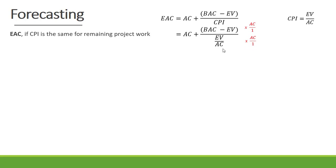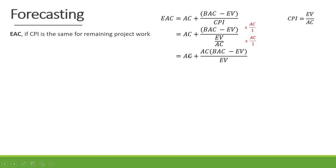So that's our actual cost plus budget at completion minus earned value, divided by earned value divided by actual cost. Now if we multiply above and below the line by actual cost, the actual cost cancels out below the line. So we get actual cost plus actual cost times budget at completion minus earned value, divided by earned value.